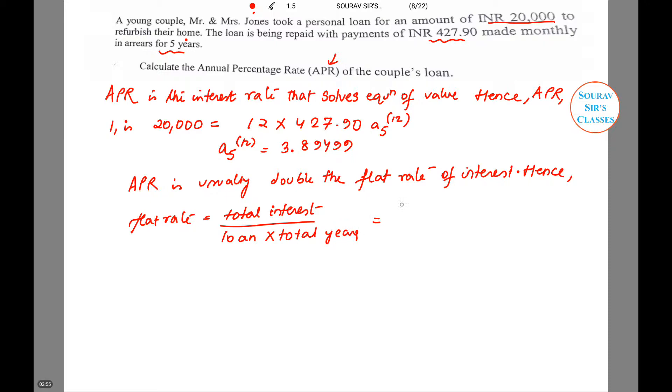Let us substitute the value. It is 5 times 12 times 427.90 minus 20,000, divided by 20,000 times 5. This will give us a value of 5.67%. Thus, APR is likely to be around 11%.